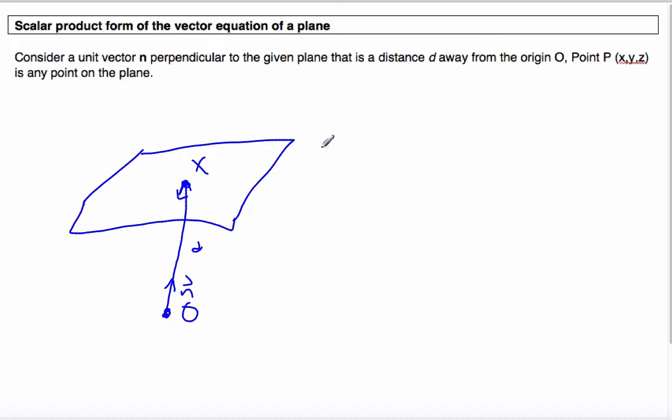And so OX is equal to the distance of this vector times N, the unit vector. This is a unit vector, and that's an important piece for later on, is a unit vector perpendicular to the plane, to the plane, we'll call it π.